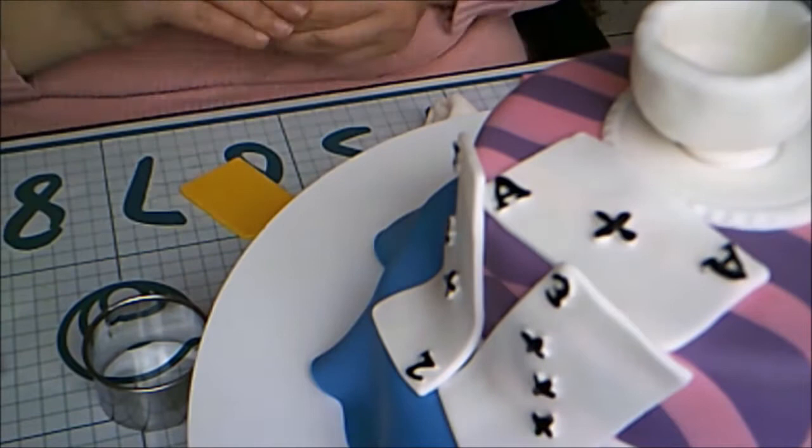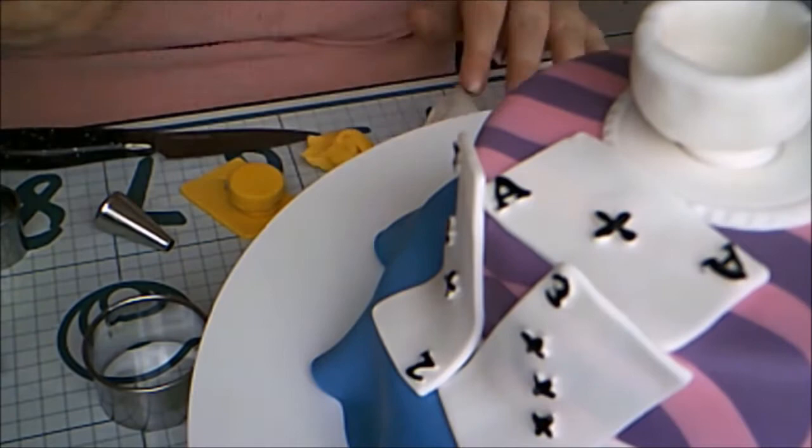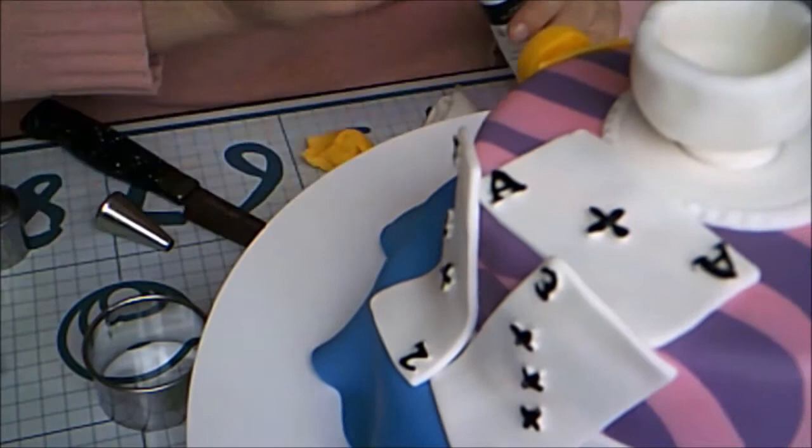Then I rolled out more yellow fondant and cut out a rectangle. I laid a small thick circle on top and a larger circle around that. Then I cut out a keyhole and we have a doorknob. I painted black food coloring inside the keyhole as well as two big eyes.